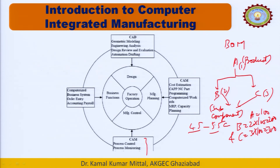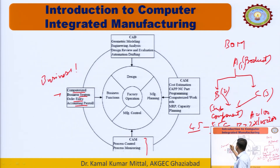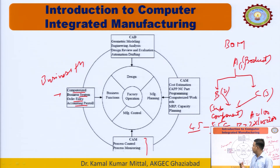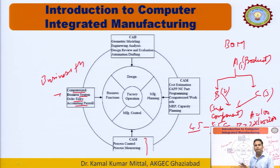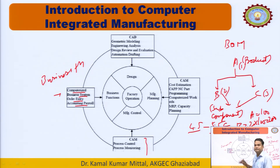Then computerized business systems: order entry, accounting, and payroll. These are business functions — accounting, control, payroll — all done with the help of computers. This completes the overview of Computer Integrated Manufacturing.